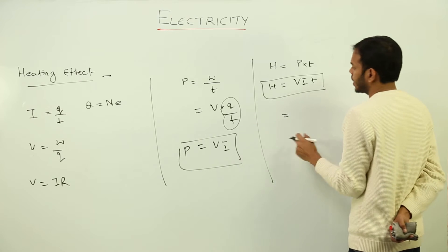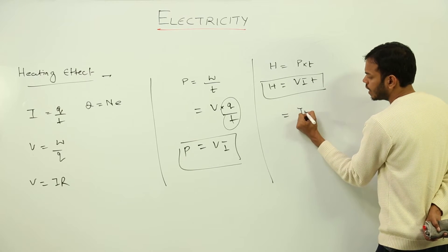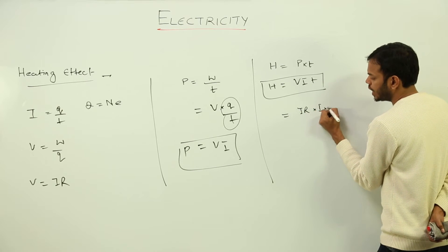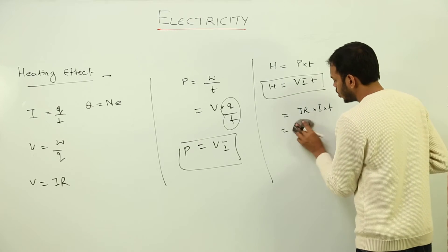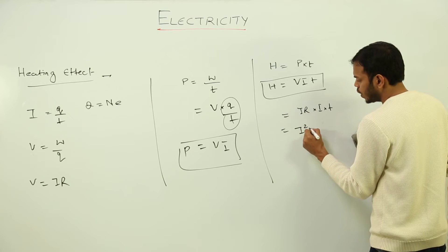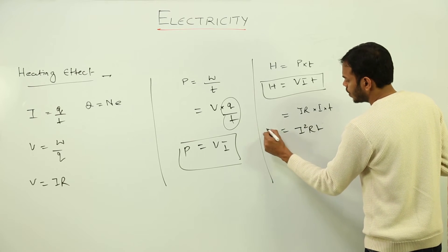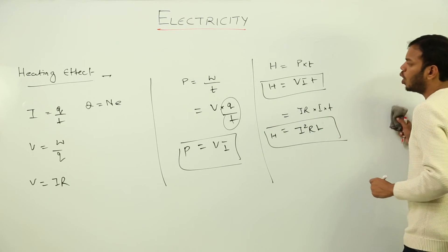Another formula can be - put V equals to IR, so I'll get IR into I into T. So I'll get I square, I square RT, not R square. This becomes I square RT. This is the value of heat generated.